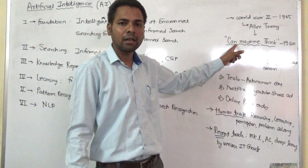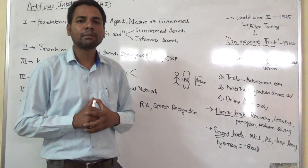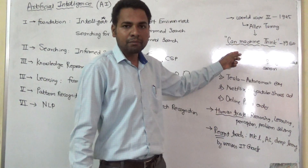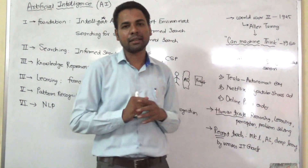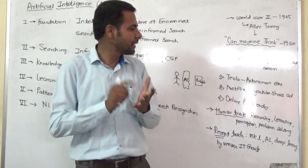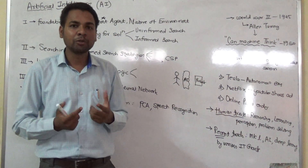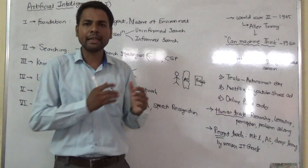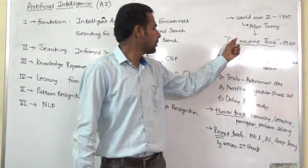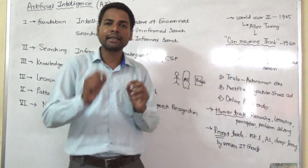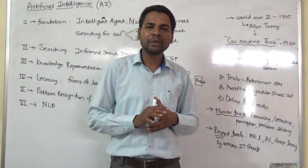Alan Turing published a paper at a conference in 1950. That conference was very popular — the Dartmouth conference. In that conference, Alan Turing published a paper titled 'Can Machine Think?' The whole world started thinking in this direction: can a machine think like a human being? Can it solve problems, reason, take decisions, and perform actions? Alan Turing was thinking whether all these human traits could be put into machines, and that is why he gave this title to his paper.